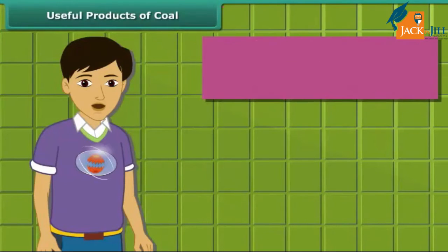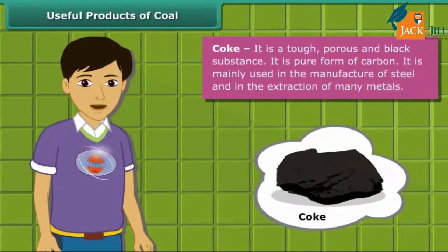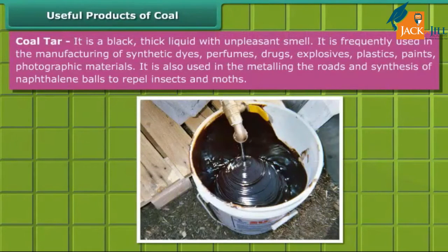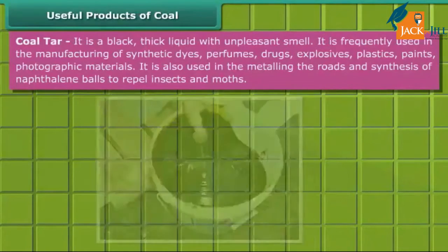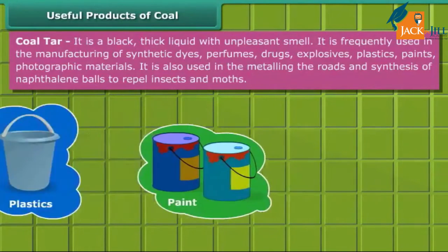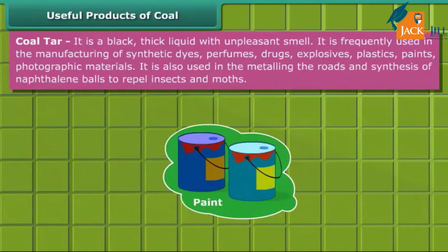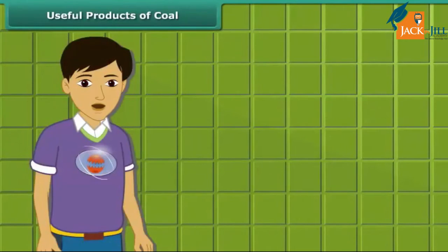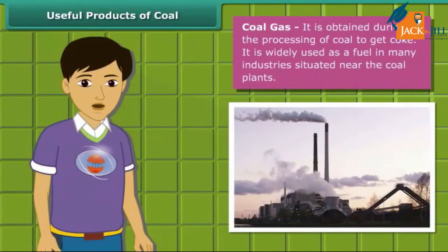Let us know about coke first. Coke is a tough, porous and black-colored substance mainly used in the manufacturing of steel and extraction of many metals. Coal tar is a black, thick liquid with an unpleasant smell, frequently used for manufacturing synthetic dyes, perfumes, drugs, explosives, paints, plastics, and photographic materials. Coal gas is produced from coal and is used as a fuel in many industries located near coal plants.